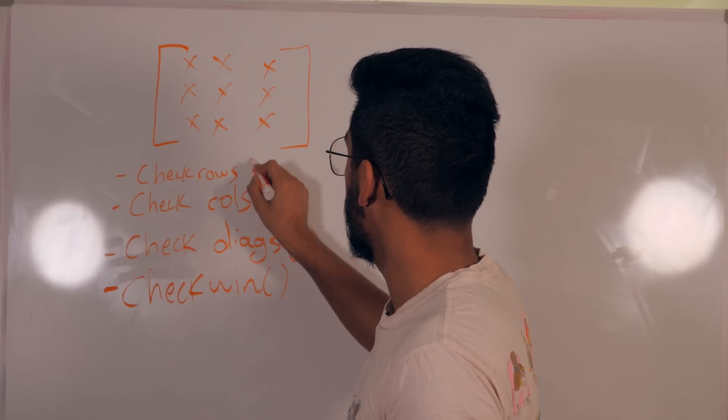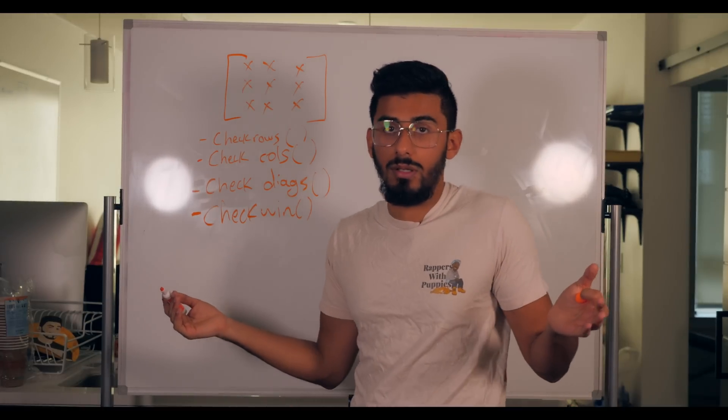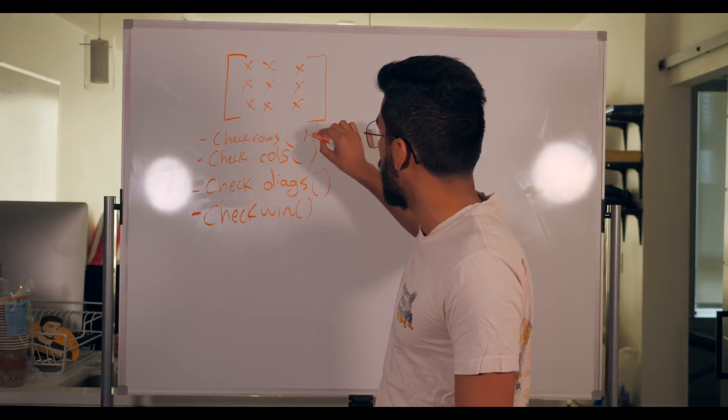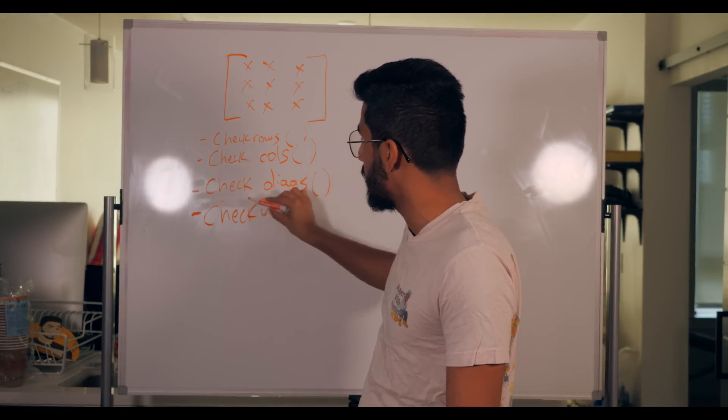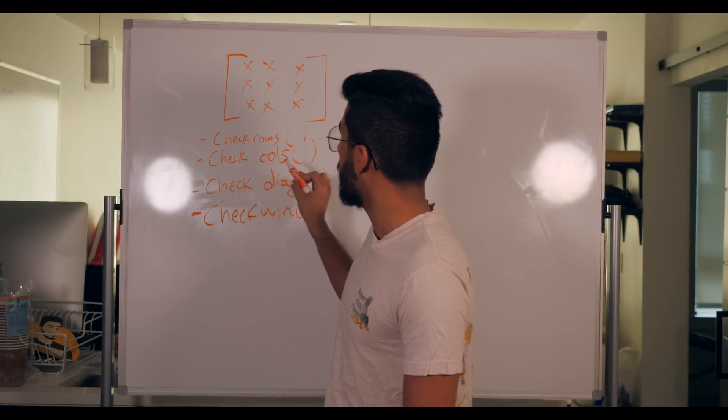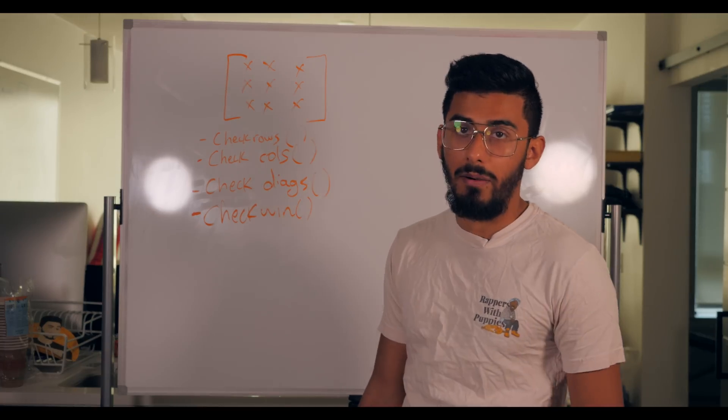So we have all these functions. The check win function, well, all this can be, it can be just comprised of all three of these functions, right? Because you can just run check win, and then it'll run check rows, check columns, check diags, and it'll run all three of these functions until it finds a win.